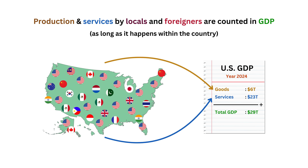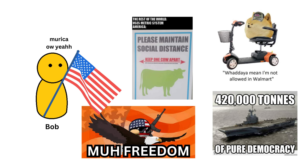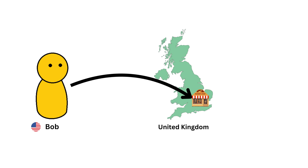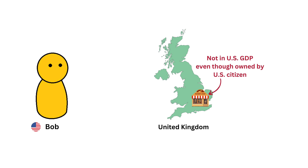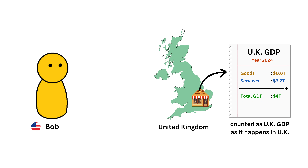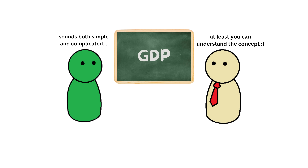It doesn't matter whether goods are made by locals or foreigners — as long as the production happens within the country, it's included in the GDP. For example, if Bob, an American citizen, opened a bakery in the United Kingdom, the bakery's value would not be counted in the US GDP because it's in the UK. Instead, it would be included in the UK's GDP because the production happens there.